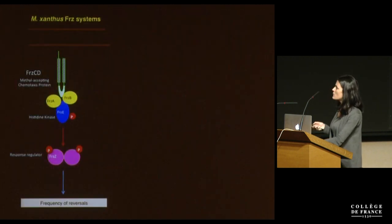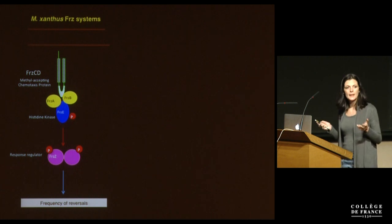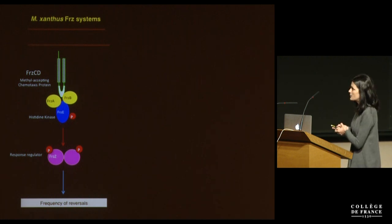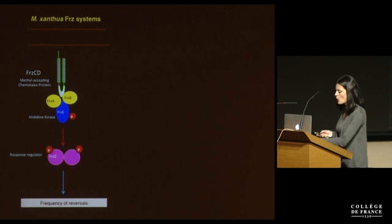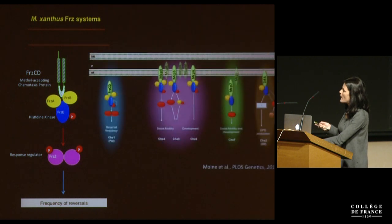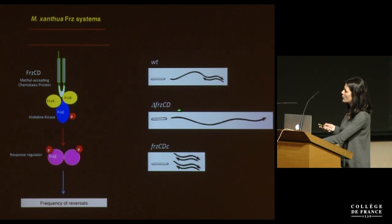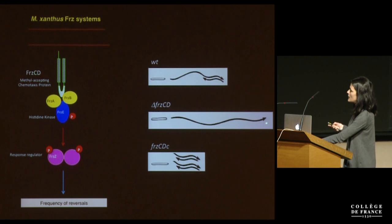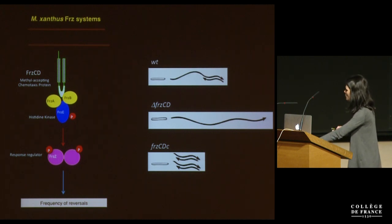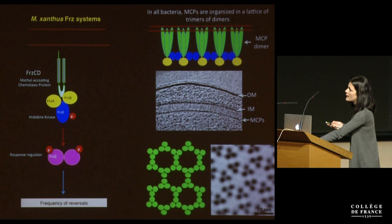Going back to Myxococcus xanthus — the reversal frequency is modulated by a Che-like system, which is the Frz system, composed of homologs of the Che pathway in E. coli. This is only one of many chemosensory systems in Myxo that we describe to be highly organized in Myxococcus cells. This system, in particular, modulates the reversal frequency — if we make a mutant in the receptor, cells will stop reversing, or we can generate constitutively active mutants that reverse very often compared to wild-type. And because this receptor is cytoplasmic, we were very intrigued to know how this system would localize in cells — we were wondering what the scaffold would be for this chemosensory system.